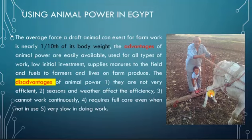The animal is affected by the weather — if it's too hot or if it's raining, its efficiency or productivity will decrease. It also requires full care even when not in use, and it's very slow in doing work. But it still has some advantages, like it may be cheaper, and it also supplies manure or fertilizer that we can use in the agriculture system.